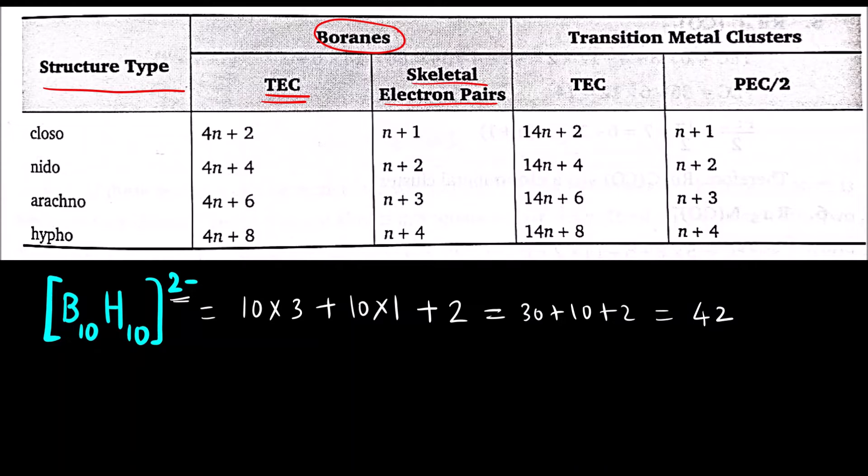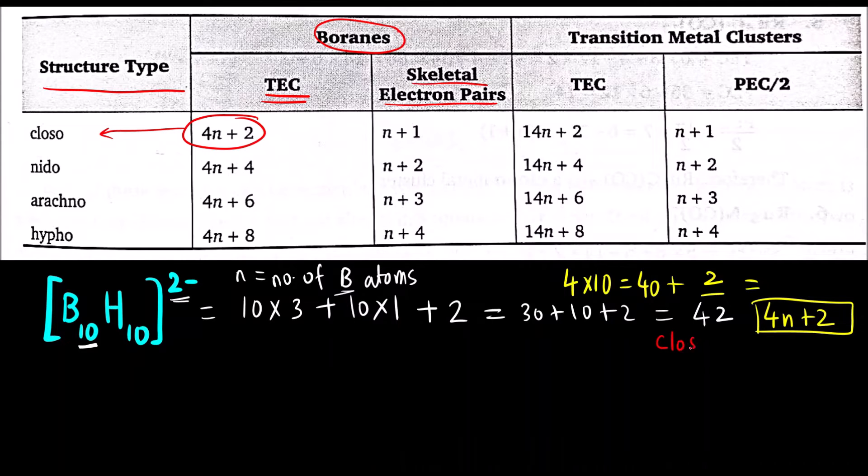Now we have to compare it with 4N value. What is N? N is the number of boron atoms. Here it is boron, so total there are how many boron atoms? 10. We will multiply it by 4. 4 into 10 that will be 40 plus what number if I do, I will get 42? 2. So this follows 4N plus 2 type of system. Compare which is 4N plus 2, 4N plus 2 is Closso. So what is the cluster type? Closso.